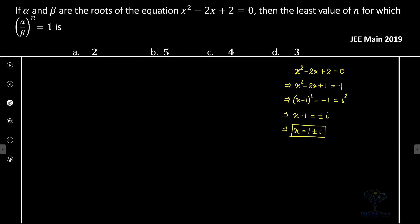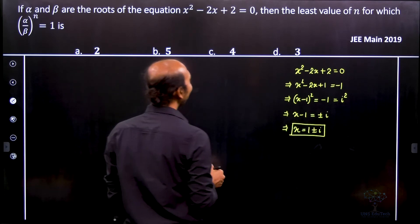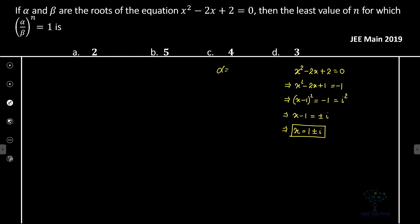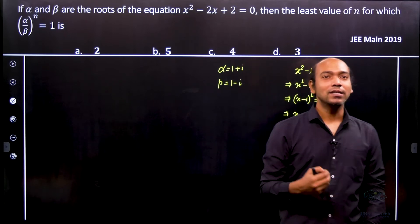This is the solution for x. Now let's determine α and β: α = 1 + i and β = 1 - i. The problem asks for α/β, so let's calculate α divided by β.